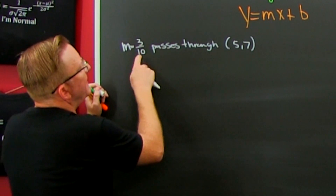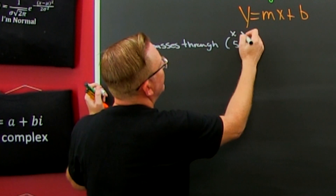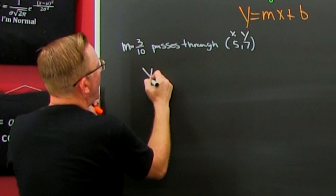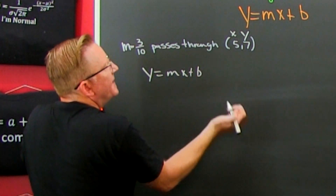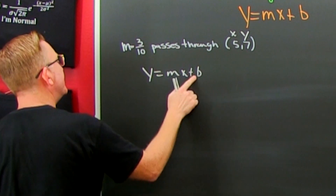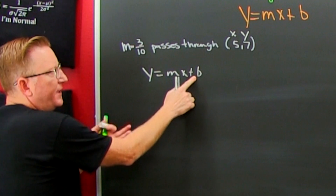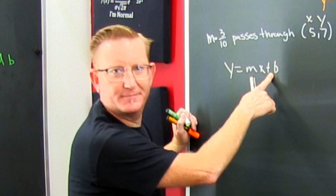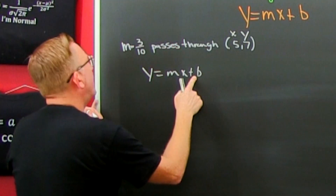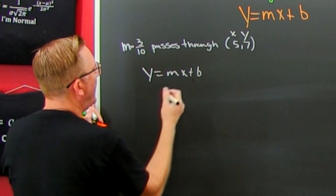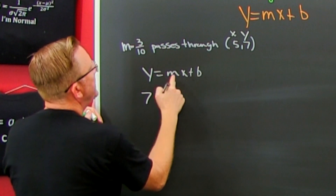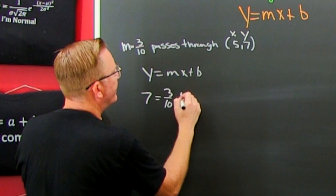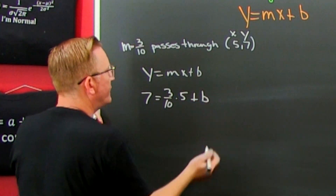So they give us an m, they give us an x, and they give us a y. Looking at y equals mx plus b, the only thing we don't have that is not given is b. So my first step is to find that b. Here my y is going to be 7, my m is going to be 3 tenths, and my x is going to be 5. And then I'm looking for b.